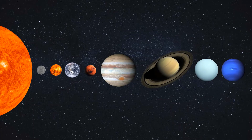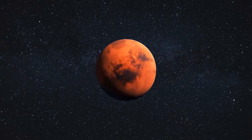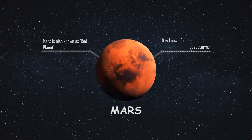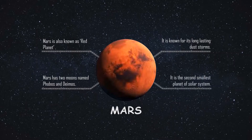The next planet and our other neighbor is Mars, also known as the red planet. This is because of the presence of iron and other minerals that cause rust, giving it a rusty red appearance. Mars is known for its long-lasting dust storms that can continue for days and even weeks. It has two moons named Phobos and Deimos, and it is the second smallest planet of the solar system after Mercury.